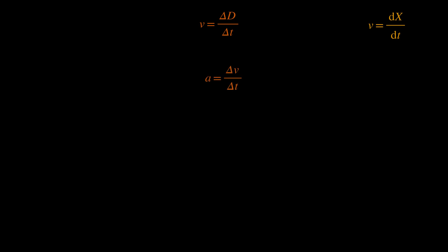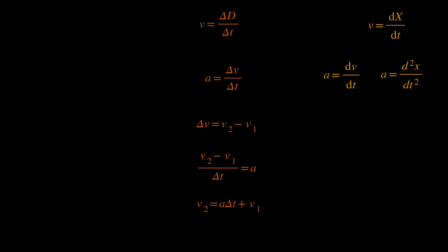We define acceleration the same way, to be the rate of change of velocity with respect to time. Delta velocity will be the velocity at some time t2, minus the velocity at a previous time t1, or v2 minus v1. And so, v2 minus v1 over delta t will be equal to a, and so v2 will be equal to a times delta t plus v1. This is trivial enough, but we're going to use it later.